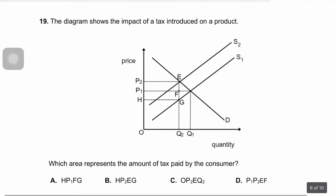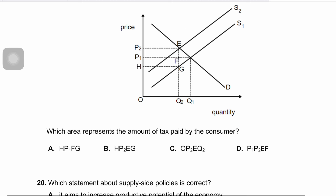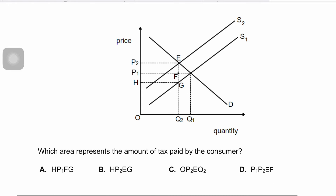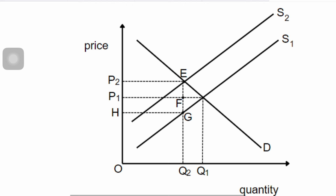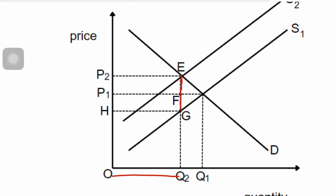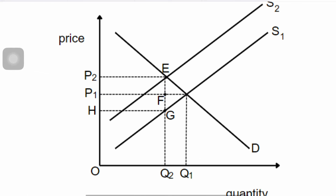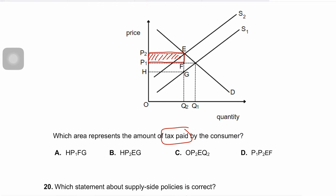Question nineteen: the diagram shows the impact of an indirect tax on a product. An indirect tax increases costs, shifts the supply curve left, and raises prices. The total tax paid is the vertical distance between the two supply curves multiplied by quantity sold OQ. The consumer's share of the tax burden is the shaded region P1P2EF. The correct answer is D.